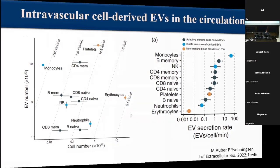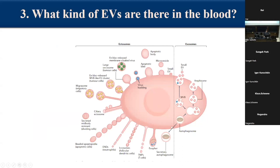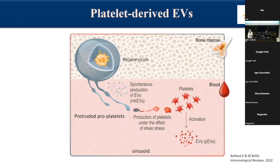Another question I would like to address is what kinds of EVs are there in the blood. Earlier we thought the question was simple: we had exosomes and plasma membrane-derived vesicles, ectosomes, which seemed relatively simple to classify as microvesicles or large apoptotic bodies. But our recent understanding showed that there are many different types of ectosomes also in the extracellular vesicle family, and there is increasing attention paid to these non-conventional vesicle types. In the next few slides, I would like to show a couple of examples of interesting vesicles in the circulation.